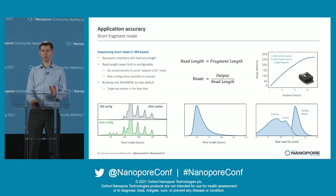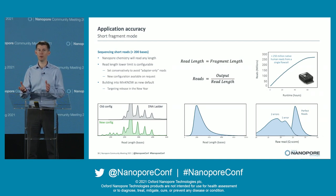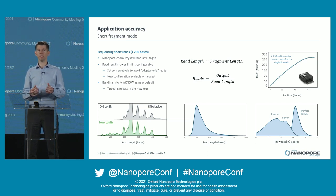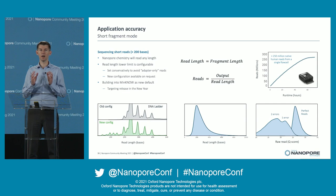Short fragments: Nanopores can do short fragments and have always done short fragments. The Nanopore chemistry will read the DNA or RNA that you give it — read length equals fragment length. We do have a lower limit in our software configurations on the reads we will output, for various historical reasons. We don't need to do that anymore. So now we have a new configuration, available on request, where we can write out short reads all the way down to about 20 bases. We're building that into MinKNOW as the new default and targeting release in the new year. We've run a large-scale experiment using fragmented human DNA, seen over a quarter of a billion short reads — around 25% of those are perfect, and another two-thirds or so have one or two errors. Nanopore short reads are highly accurate.